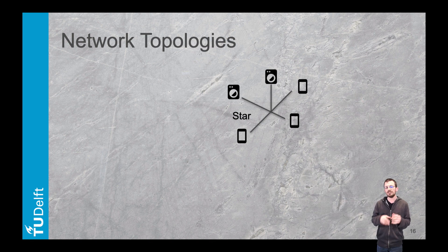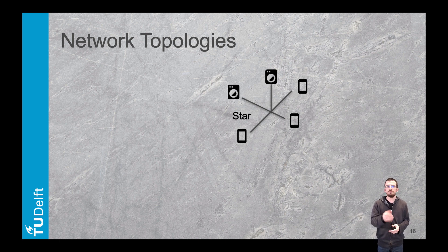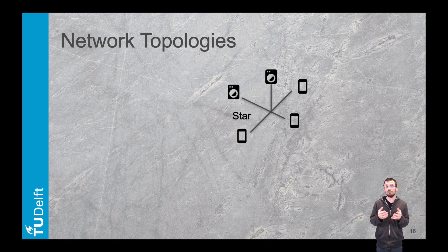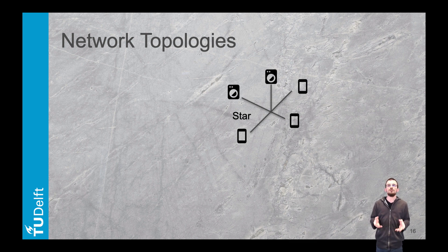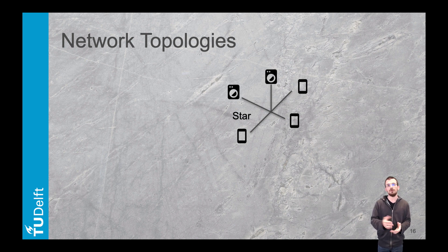Beyond the areas, we also have topologies. The internet protocol mainly relies on what we call the star topology. A network topology describes how devices of a network connect or relate to one another. In the star topology, all devices on the local network interact with a router, which routes the traffic to its destination — either another device on the local network or the next router on the internet.